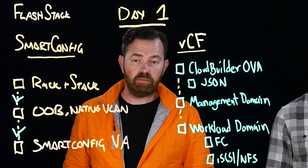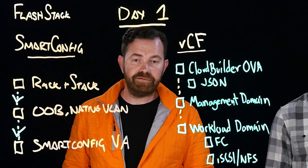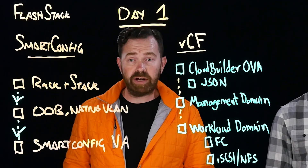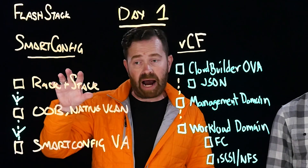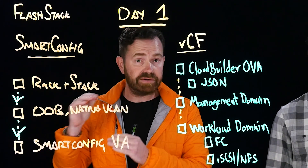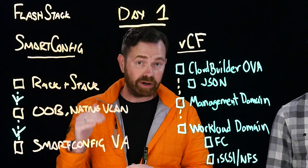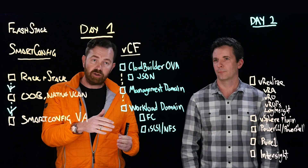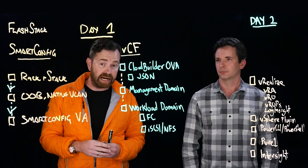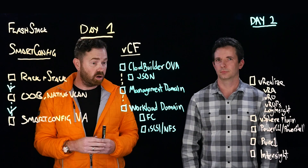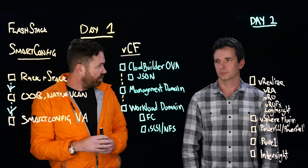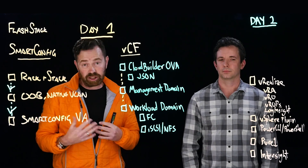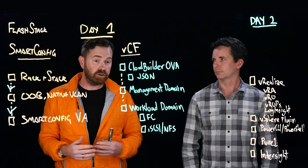Today we're going to walk through the lifecycle of deployment of FlashStack for a customer use case. We want to go through the process of using Smart Config to initially deploy and configure the FlashStack hardware, all the way up to the operating system, which in this case is going to be vSphere. Then we'll get into VMware Cloud Foundation and talk about the deployment of the management and workload domains. And finally, we'll go through a day two scenario and talk about the integration points with the different products that make up the solution stack.